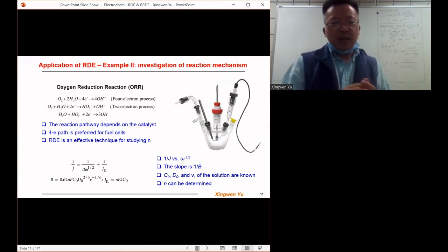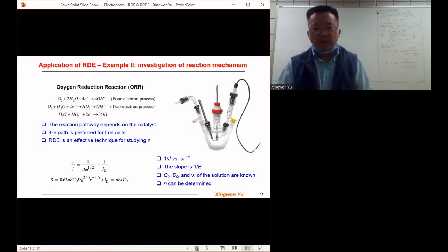The four electron pathway, the oxygen is reduced to OH⁻ directly. For the two electron transfer pathway, it's an indirect pathway.